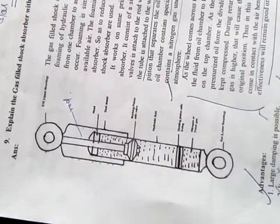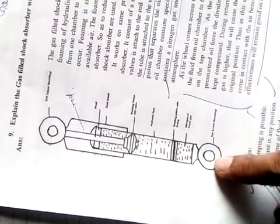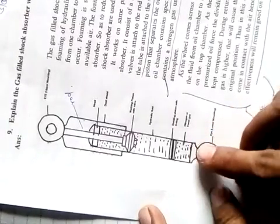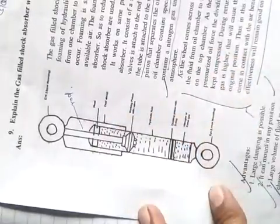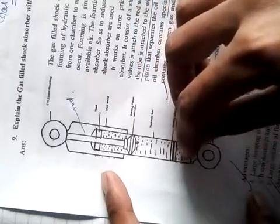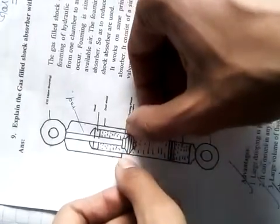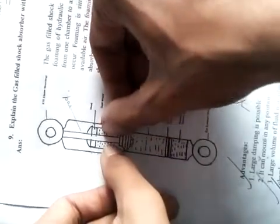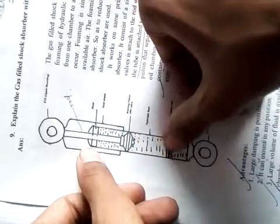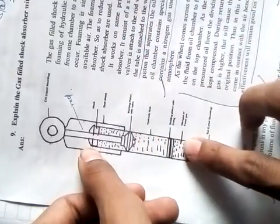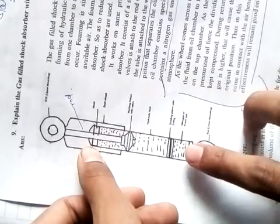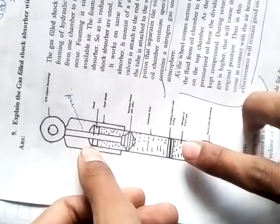Now let me tell you the working. This is where it is attached to the wheel. When it comes across a bump, this whole tube is moved up, causing this piston to come down. There is a little tolerance at the sideways of the piston, because of which this fluid moves up, causing the piston to keep moving down, which makes the gas compressed.